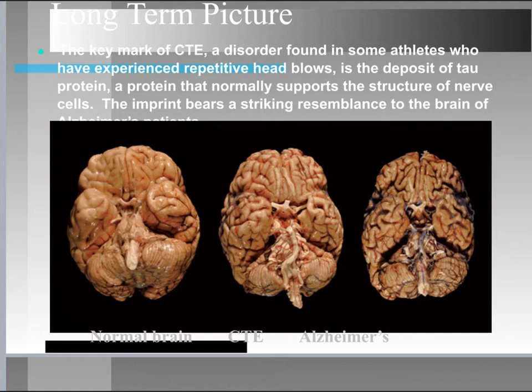The scary part about CTE is that it presents very similarly to post-concussive signs and symptoms. Signs of developing CTE include memory loss, confusion, impaired judgment, impulse control problems, aggression, depression, and suicidality. As the patient gets older, these become very hard to manage. Some athletes have taken their own lives — thinking of Junior Seau here in San Diego.